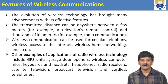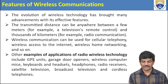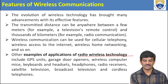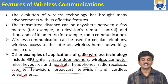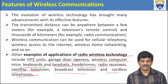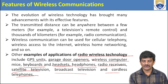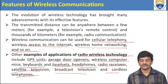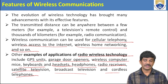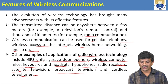Features of wireless communication include radio wireless technology such as GPS units, garage door openers, wireless computer mice and keyboards, headsets, headphones, radio receivers, satellite television, broadcast television, and cordless telephones. Applications also include cell phone telephony, wireless internet access, wireless home networking, and so on. Transmitter distance ranges from few meters — like a TV remote — to thousands of kilometers for radio communication.